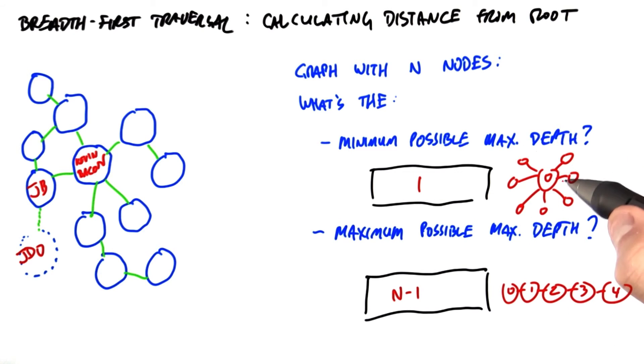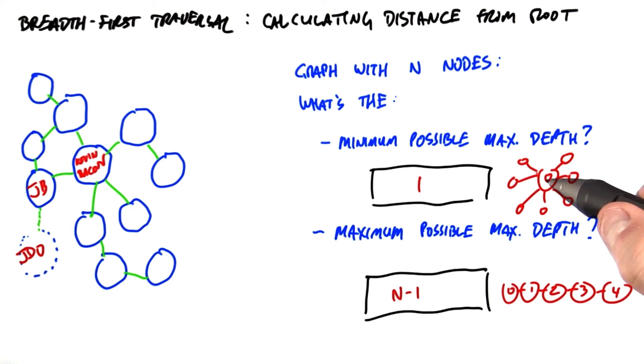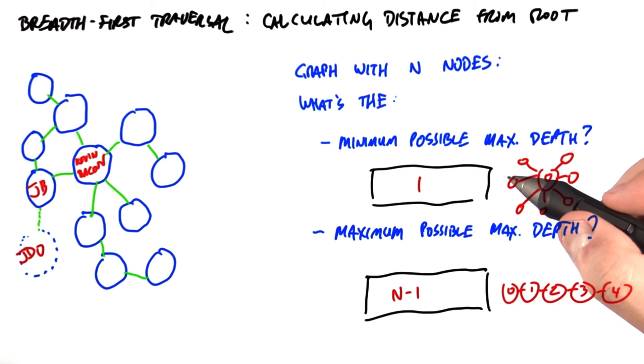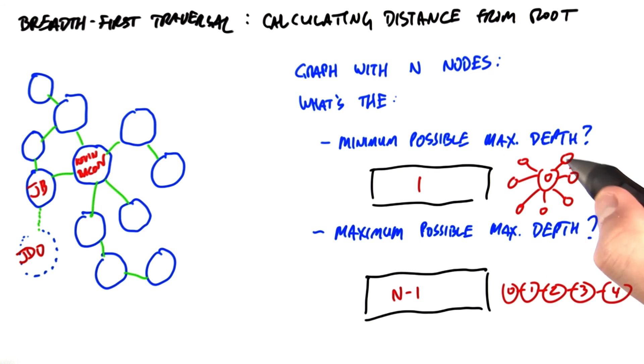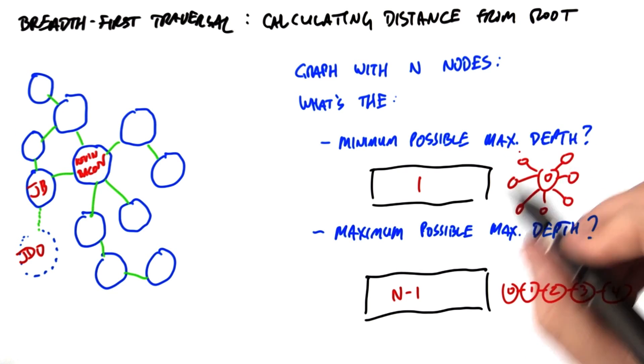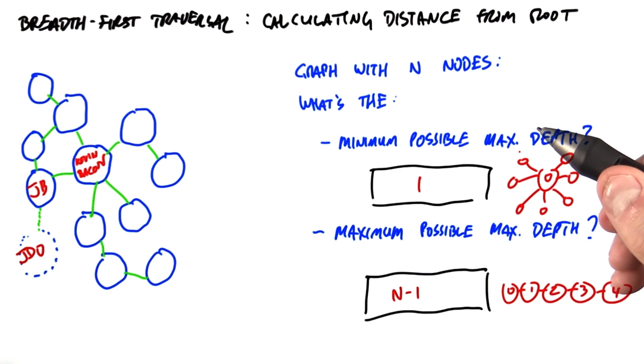But if we have a graph that looks like this — a star-shaped graph — then parallelization is a lot more straightforward. We can process each one of those leaves independently and in parallel.